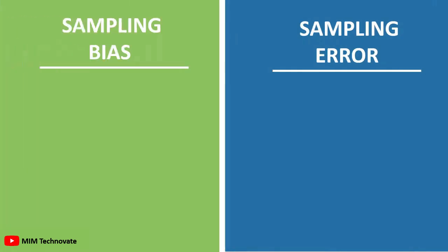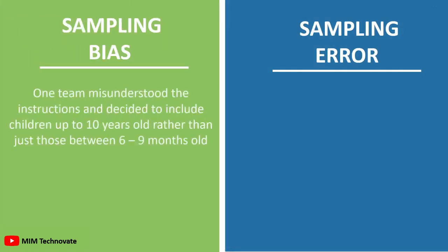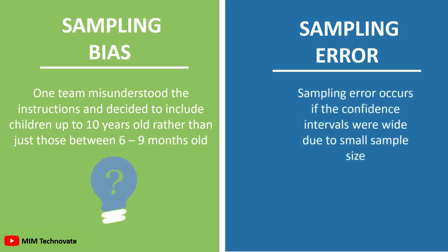Example of sampling bias: One team misunderstood the instructions and decided to include children up to 10 years old rather than just those between 6 to 9 months old. Example of sampling error: Sampling error occurs if the confidence intervals were wide due to a small sample size.